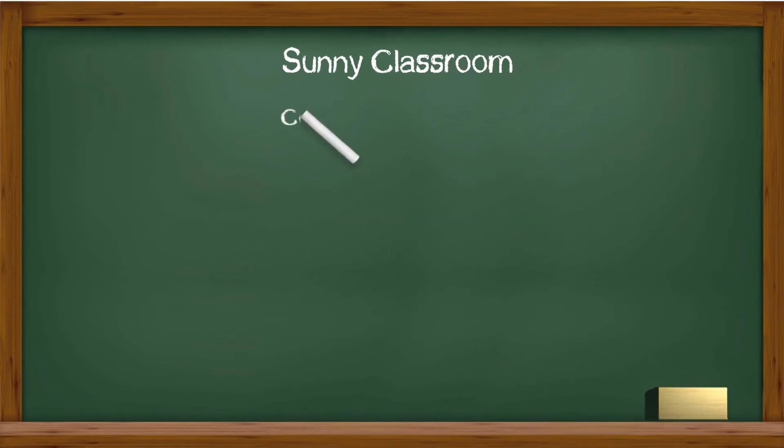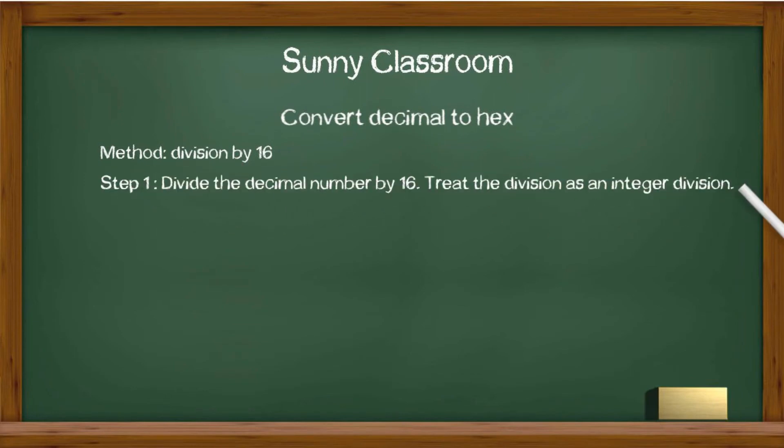The method of converting decimal to hexadecimal is division by 16. The process involves 6 steps. Step 1. Divide the decimal number by 16. We treat the division as integer division.